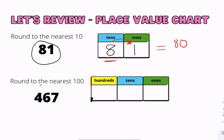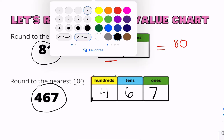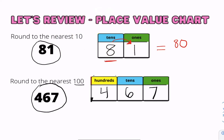Let's go ahead and do the next example. Round to the nearest 100, we have the number 467. We first write it in our place value chart. Next, we're going to underline the 4, then look next door at the 6.